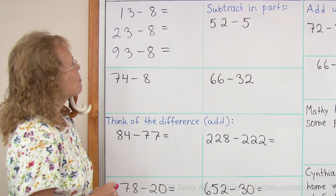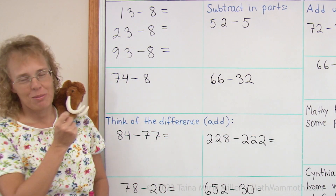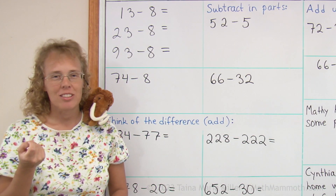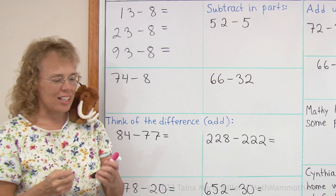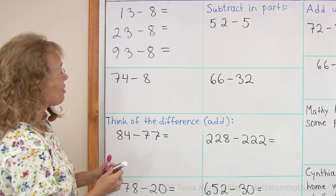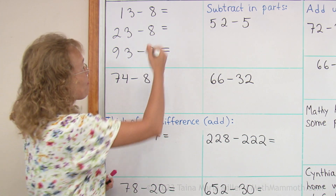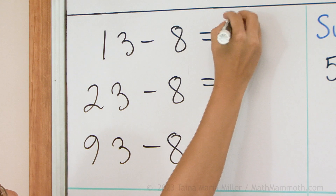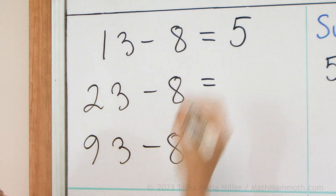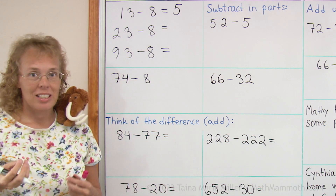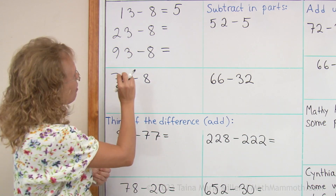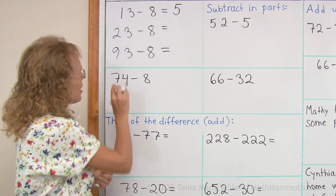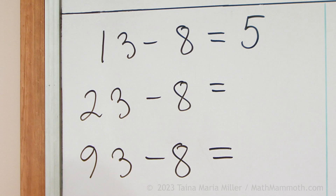My first strategy is here: you know 13 minus 8 because it's one of the basic subtraction facts. The answer is 5. That becomes like a helping problem — we can use that to solve some others, such as 23 minus 8.